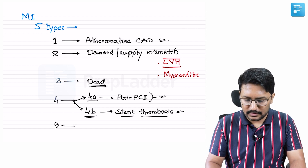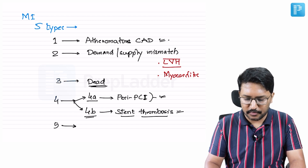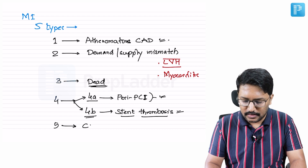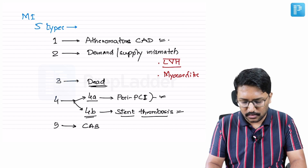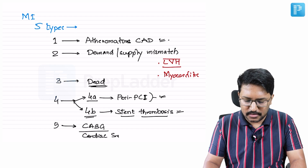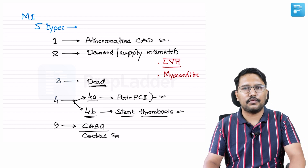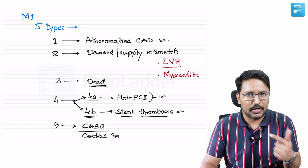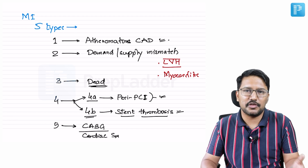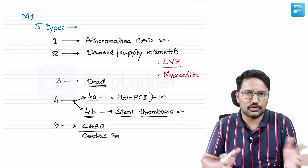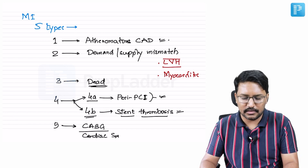Type 5 myocardial infarction is where the patient develops MI as a consequence of CABG or cardiac surgery. During cardiac surgery or CABG there is an increased risk of MI because coronary perfusion can be compromised, and the patient may spend a lot of time on the heart-lung machine — those are all vulnerable periods.